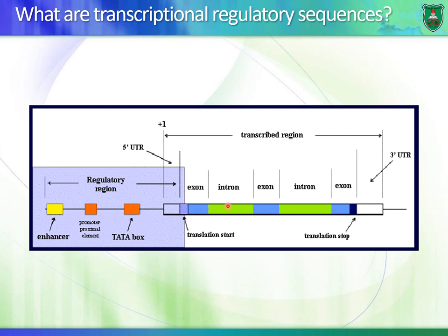Enhancers can be located upstream, downstream, or within the gene itself, like an intron. What happens is that the DNA loops so that you can have interaction between proteins that bind to the enhancer with proteins that bind to the core promoter or the promoter proximal element. You can have enhancers and silencers — regions that activate transcription and regions that inhibit or block transcription. Same thing with promoter proximal elements.